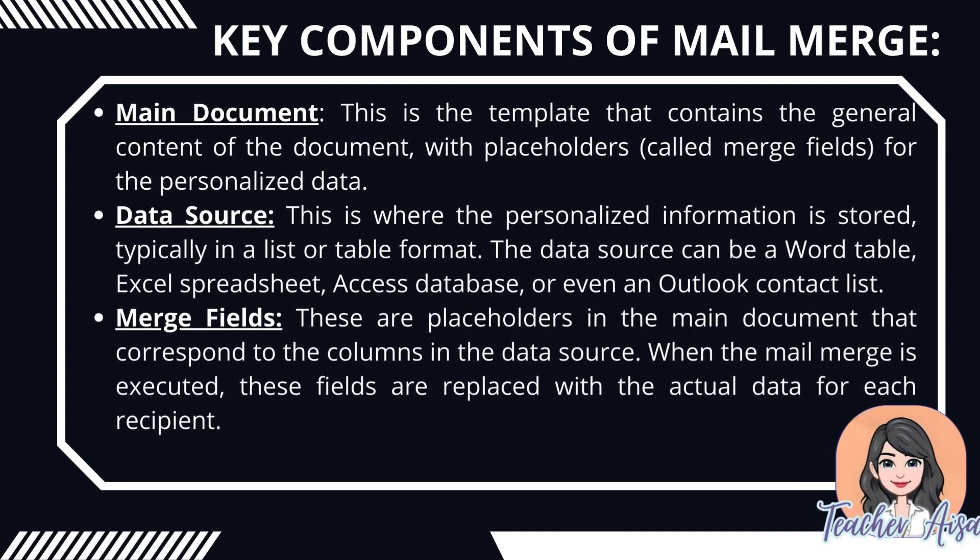Here are the components of mail merge. Main document: this is the template that contains the general content of the document, with placeholders called merge fields for the personalized data. Data source: this is where the personalized information is stored, typically in a list or table format. Merge fields: these are placeholders in the main document that correspond to the columns in the data source.